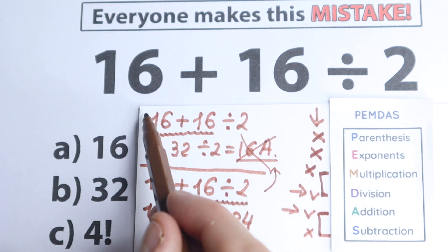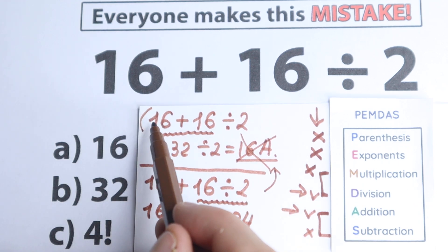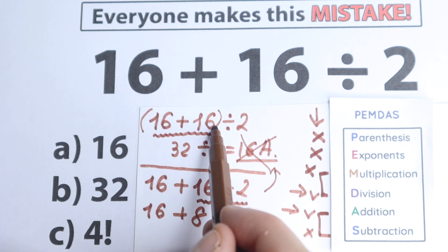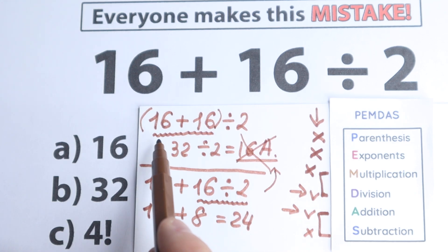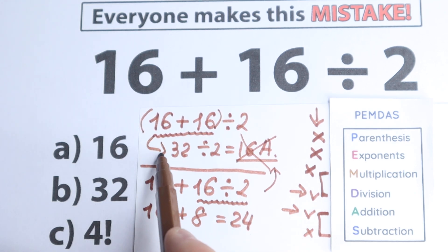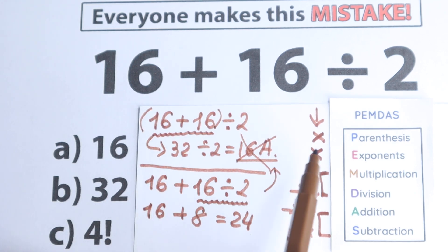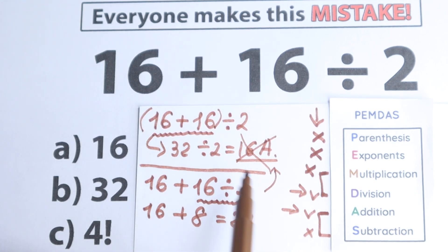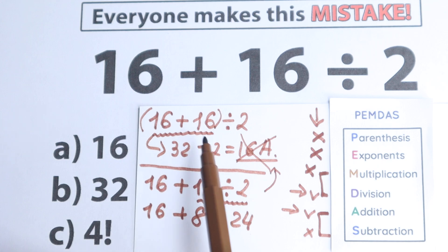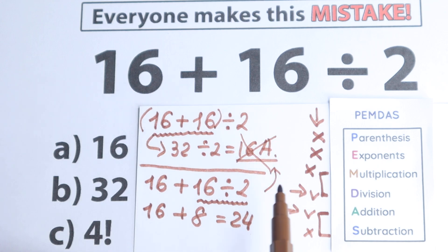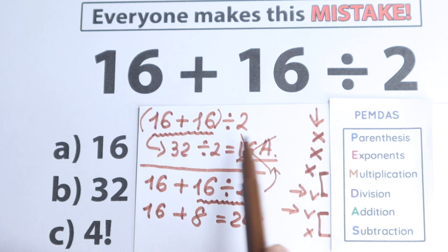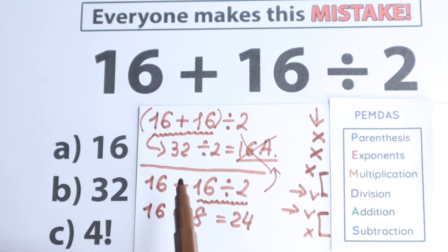Now, if you put parentheses — like (16 plus 16) divided by 2 — then the correct answer would be 16. We start from parentheses and then the answer is 16. But in our case we don't have any parentheses, so that is absolutely the wrong solution for us.